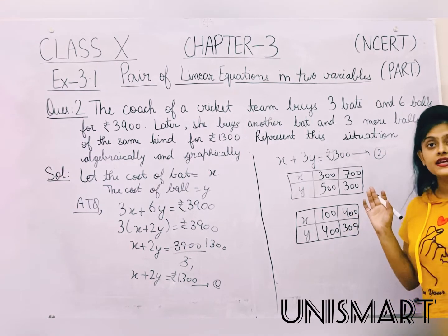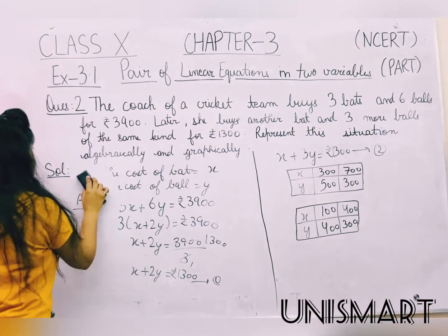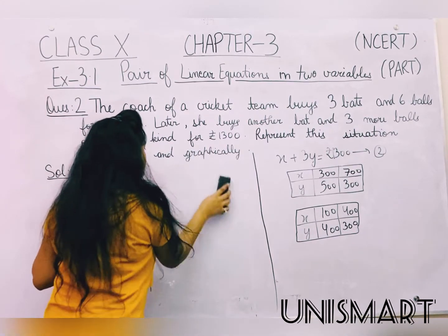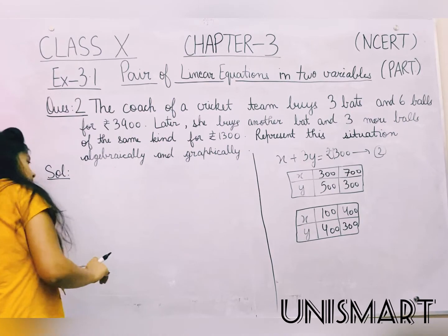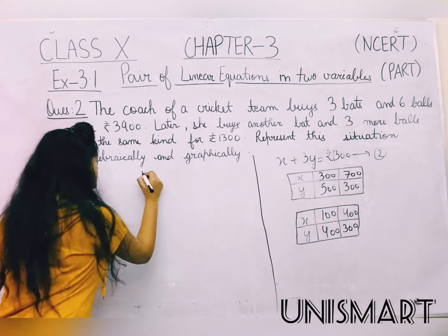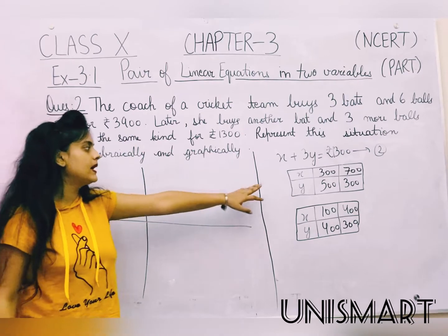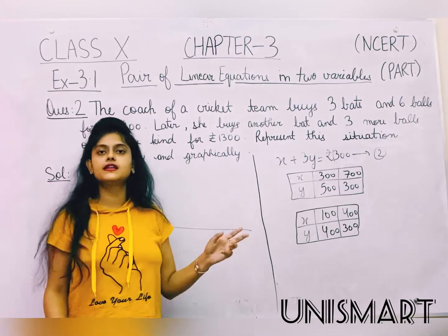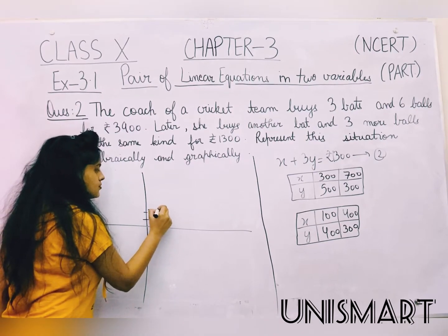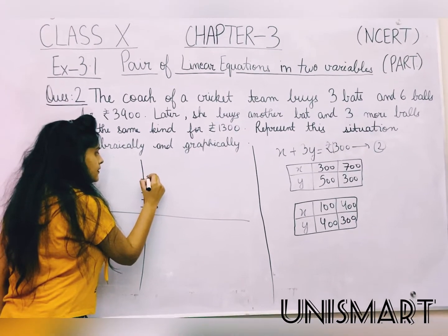Now I will plot it on the graph. So here is the graph. The biggest value we need on the Y-axis is 500, so we mark: 100, 200, 300, 400, 500 going upward. Then we take down: minus 100, minus 200, minus 300, minus 400, minus 500. This is Y-prime.